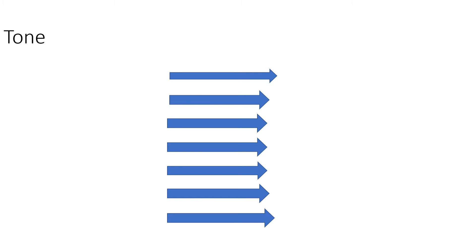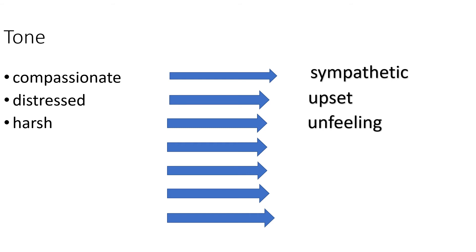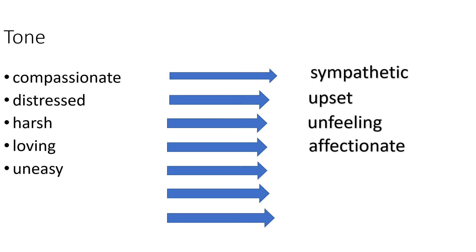When looking at tone, think about the type of tone you're using to get across a message to your reader. A compassionate tone uses language that suggests sympathy to either a character or a situation. A distressed tone means you can see in the writing that there is some upset. A harsh tone won't show any feeling — it will be really unfeeling. A loving tone will be shown as affectionate. An uneasy tone shows a lack of security, either within a character or from the writer's perspective.